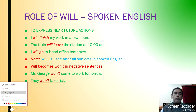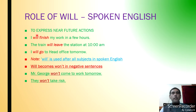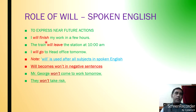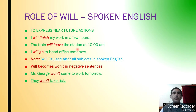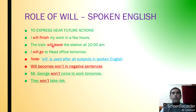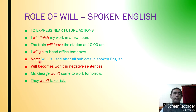Today, we are going to learn Will — modal auxiliary will. To express near future actions, we use Will. For examples: 'I will finish my work in a few hours' — means the work is not yet completed, soon it will be completed. 'The train will leave the station at 10 a.m.' — the train has not yet started, soon it will start. 'I will go to Hedafi's tomorrow' — it's tomorrow's action, not today's action.